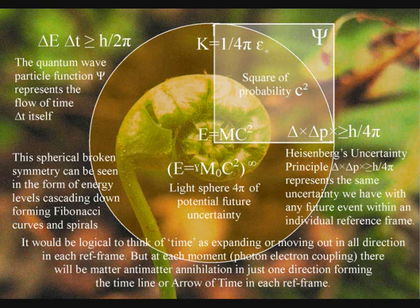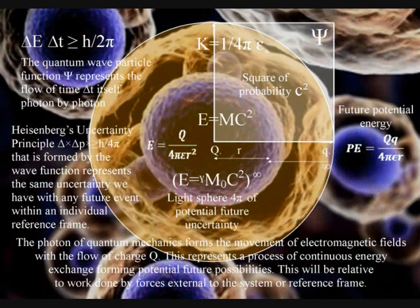The fine-tuned universe is the proposition that the conditions that allow life in the universe can only occur when certain universal fundamental physical constants lie within a very narrow range, so that if any of the fundamental constants were only slightly different, it would have been impossible for life to have evolved within the universe.